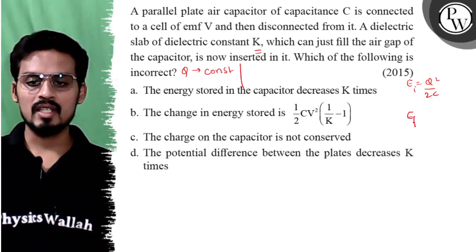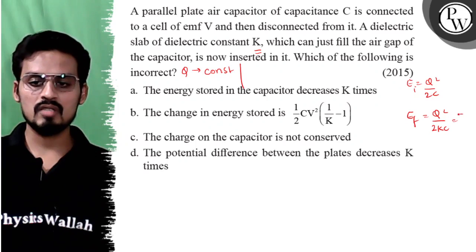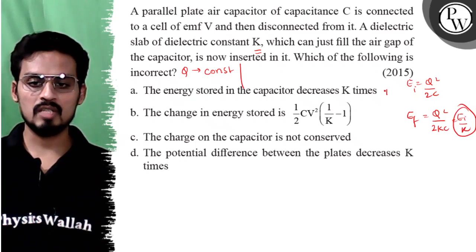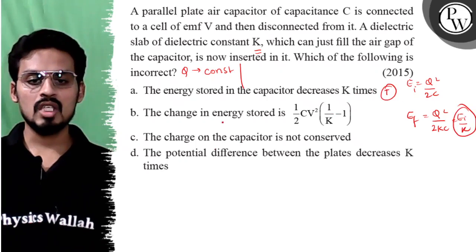This is the initial energy, and in the final case Q value remains same but the value of C changes to KC. So this becomes 2 times KC, which is equal to initial energy divided by K. So the first statement is true: the energy decreases by K times.